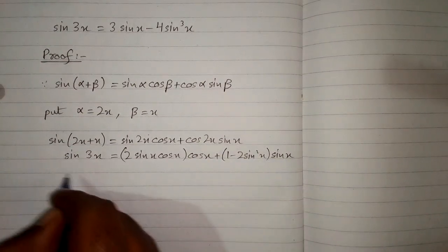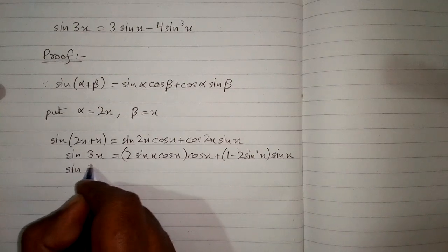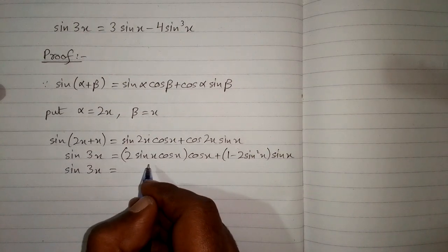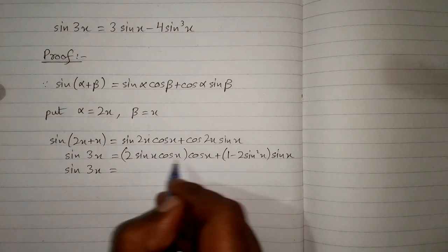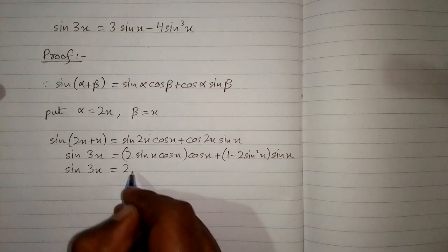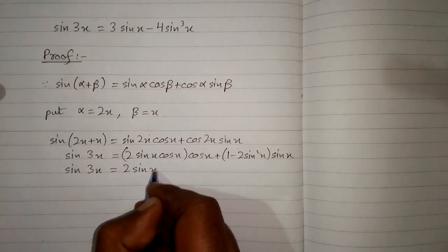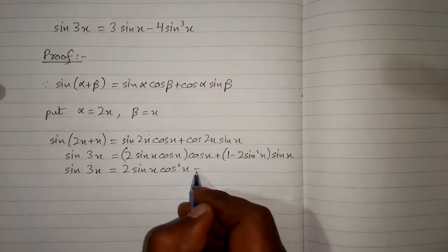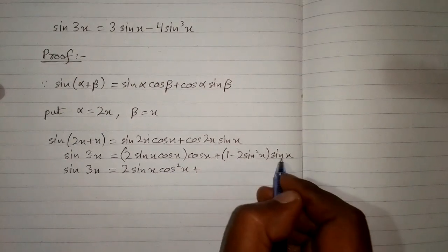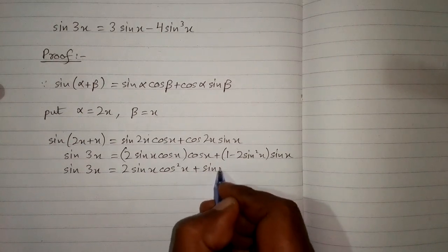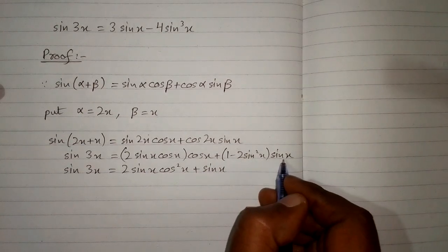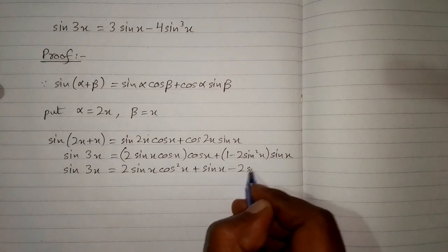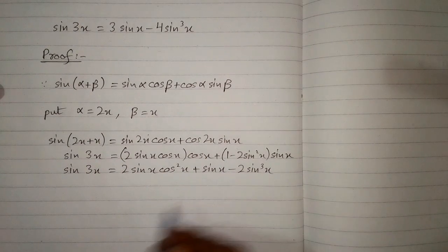So sine 3x is equal to: cos x multiplied by cos x is cos square x, giving us 2 sine x cos square x. Then plus 1 multiplied by sine x is sine x, and minus 2 sine square x multiplied by sine x is minus 2 sine cube x.